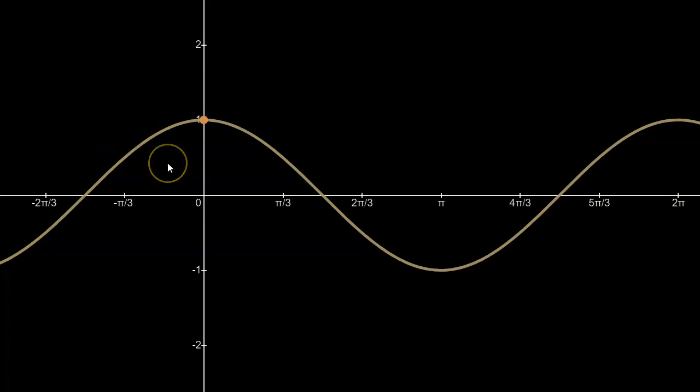We'll start with the graph of y equals cosine x, and I've marked the maximum point on the y-axis. Let's call this the start point. All I have to do to identify the phase shift is to find out what happens to this point after the transformation.